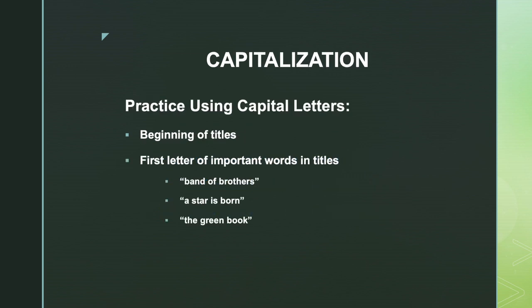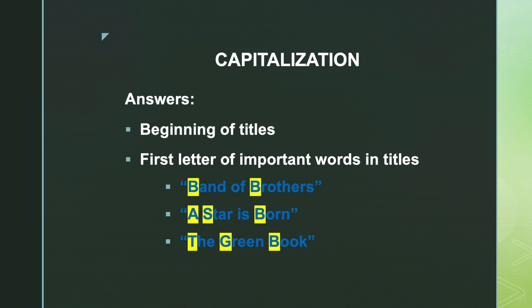Now let's practice capital letters at the beginning of titles and the first letter of important words in titles. 'Band of Brothers' — the B in Band and B in Brothers are capitalized; 'of' is not, because it's not an important word. 'A Star Is Born' — A, S in Star, and B in Born are capitalized; 'Is' is not an important word. 'The Green Book' — T, G, and B are all capitalized as the first letters of the title.